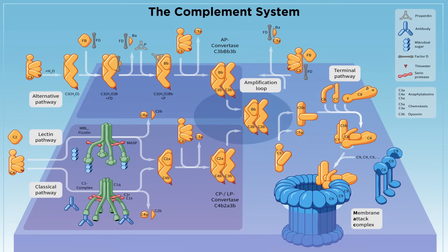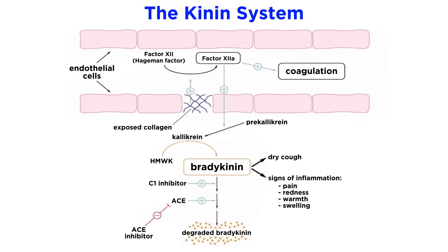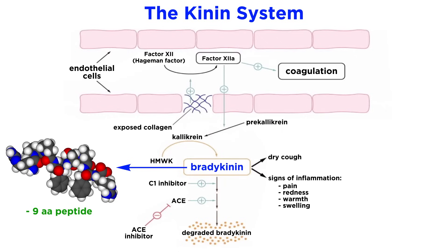We have already discussed the complement system, which helps clear infectious microbes. However, there are other important protein cascades that are mediated by plasma proteins. One of these is called the kinin system. The kinin system is similar to complement in that it is a protease cascade which involves a sequence of proteins cleaving and activating other proteins. Bradykinin is one of the terminal products of the kinin system. It is a 9-amino acid peptide that increases vascular permeability and promotes pain sensing.